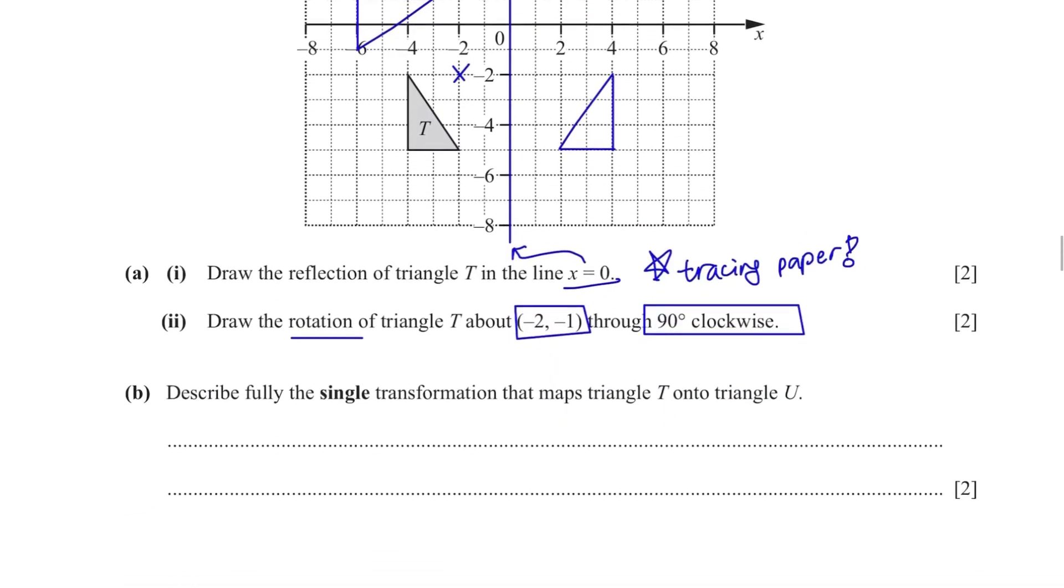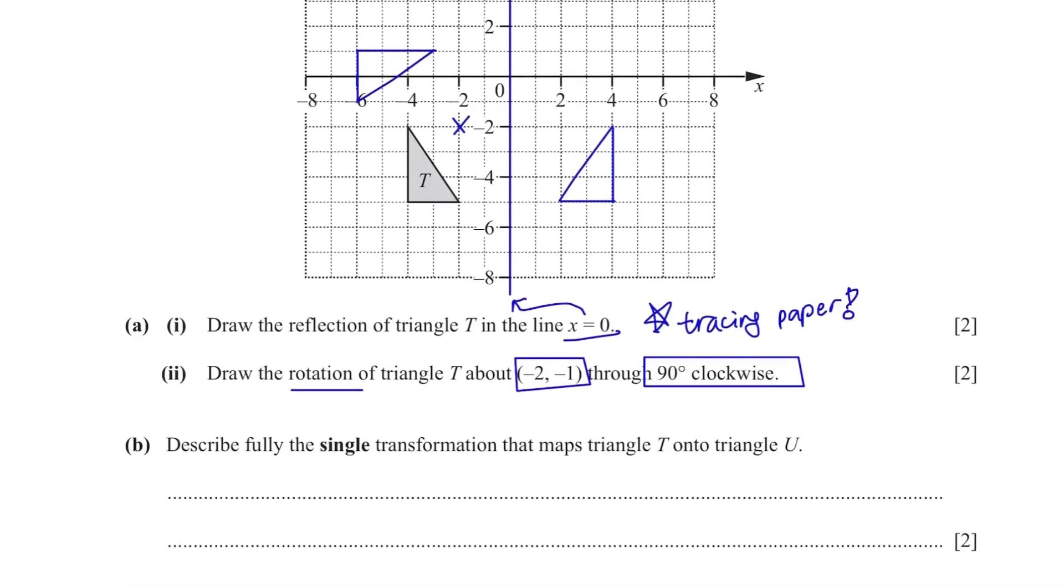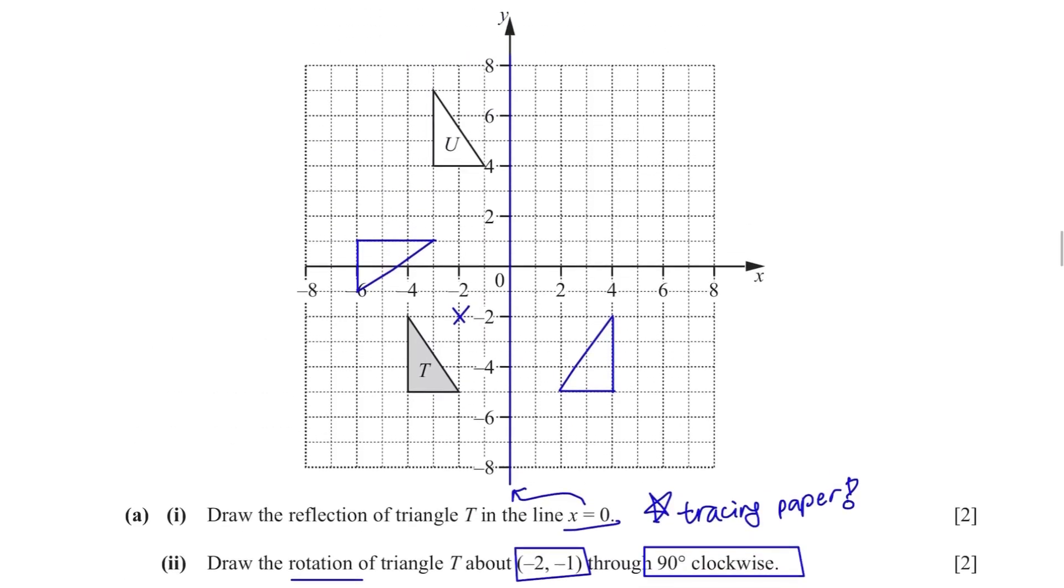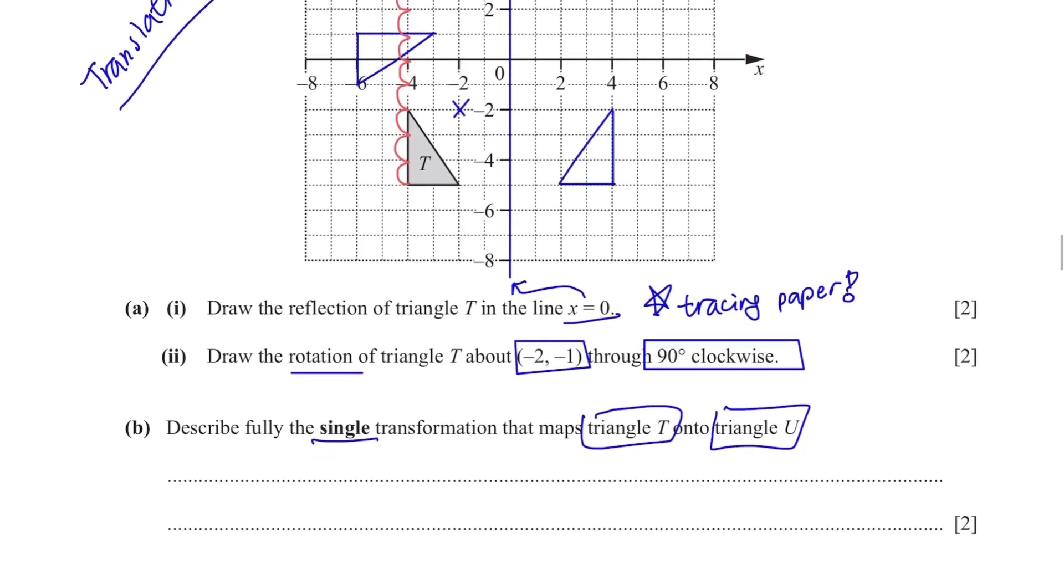Part B. Describe fully the single transformation that maps triangle t onto triangle u. Looking at the graph, I don't think it's rotation or reflection because the shape is exactly the same. It should be translation. It moved up 9 blocks and moved right by 1 block. It's written as this in a matrix form.